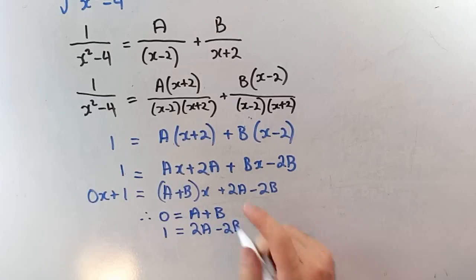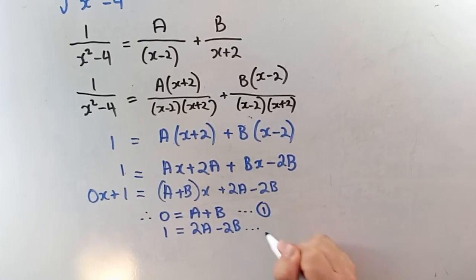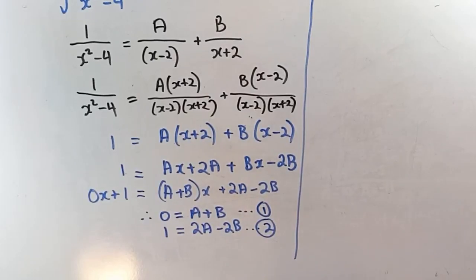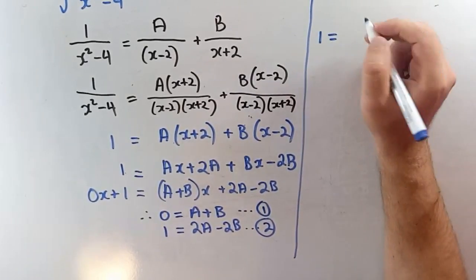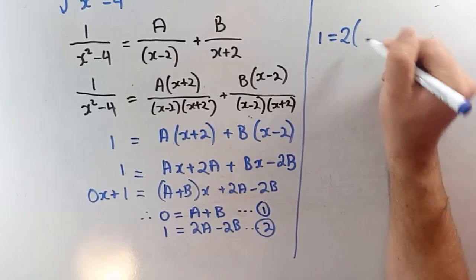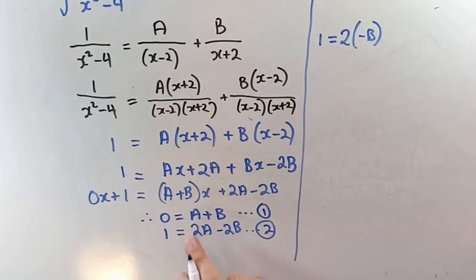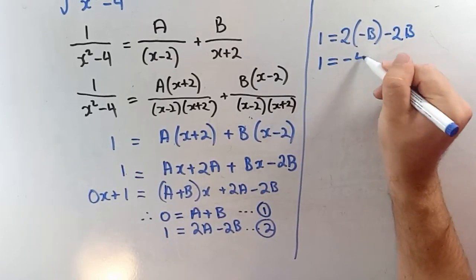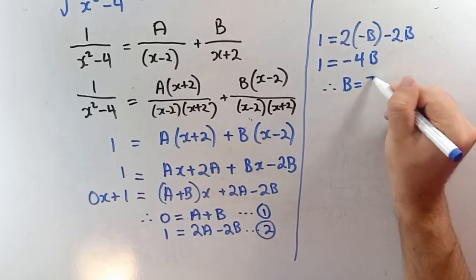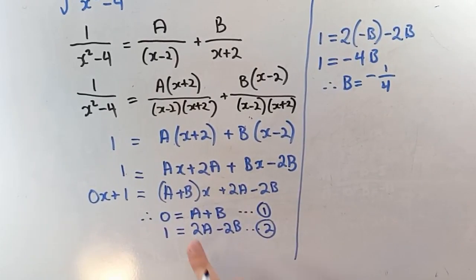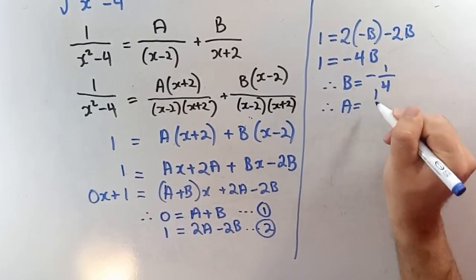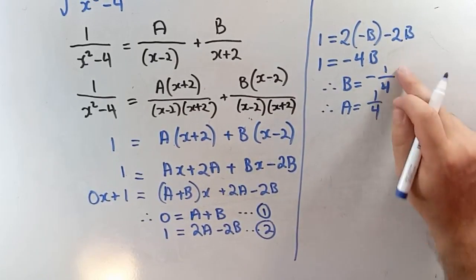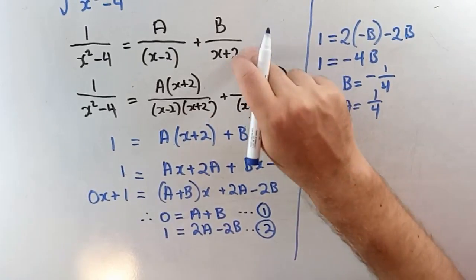From equation 1, a equals negative b. Substituting into equation 2: 1 equals 2(negative b) minus 2b, so 1 equals negative 4b, therefore b equals negative one quarter. And since a plus b equals 0, a equals one quarter.